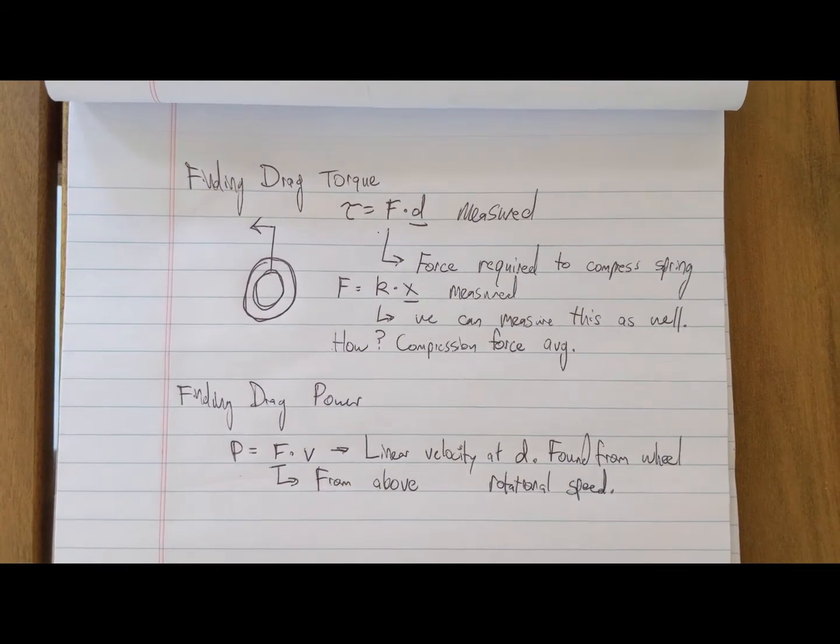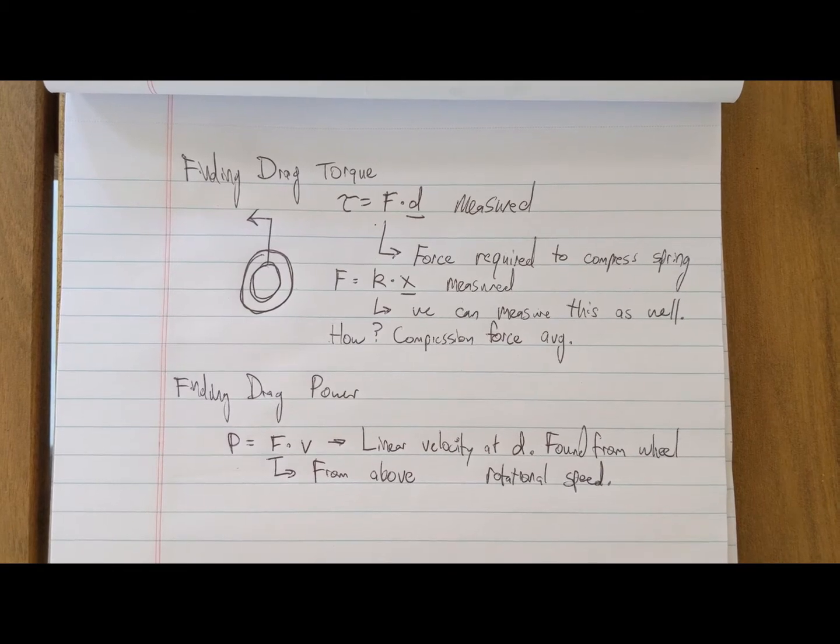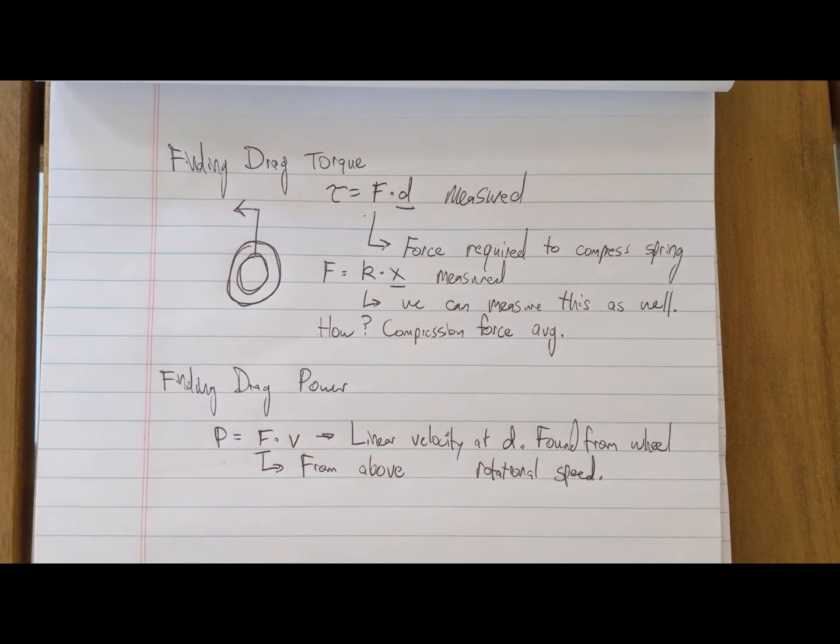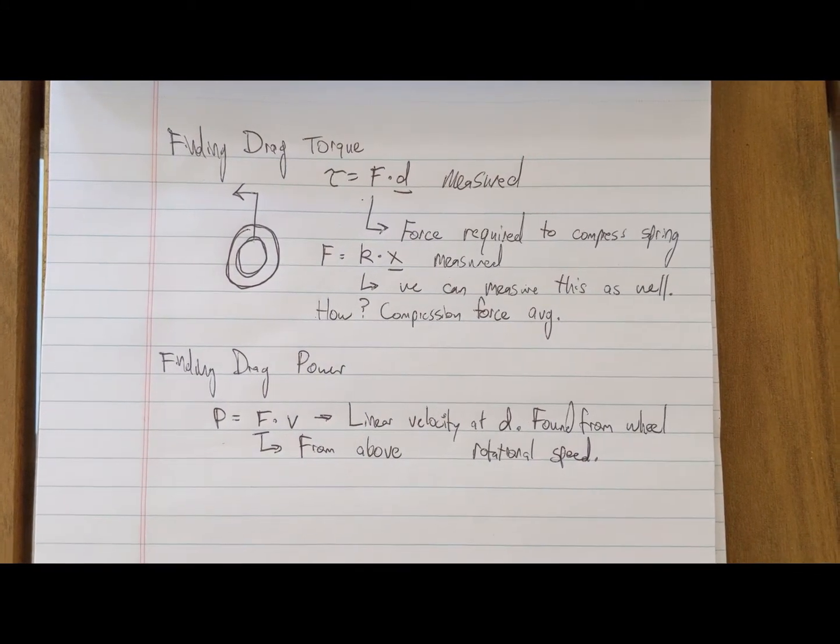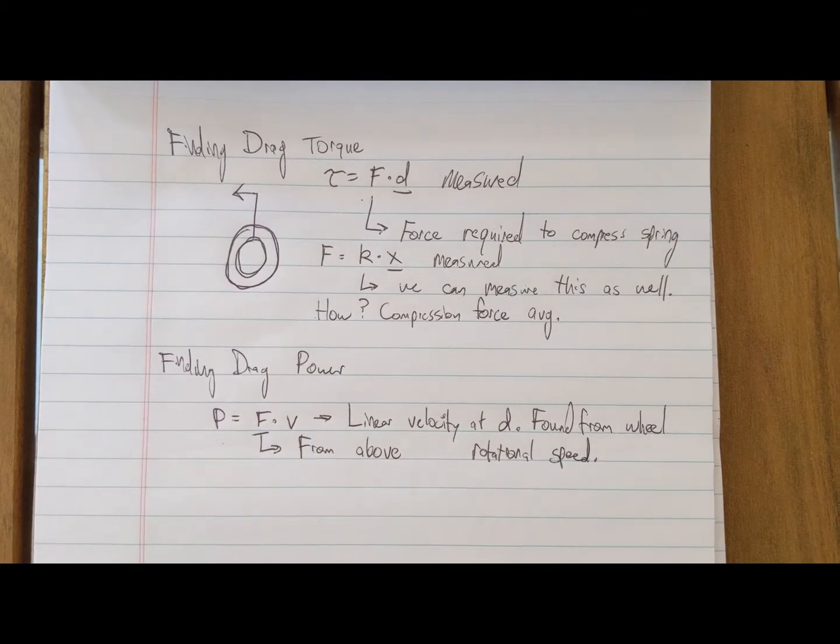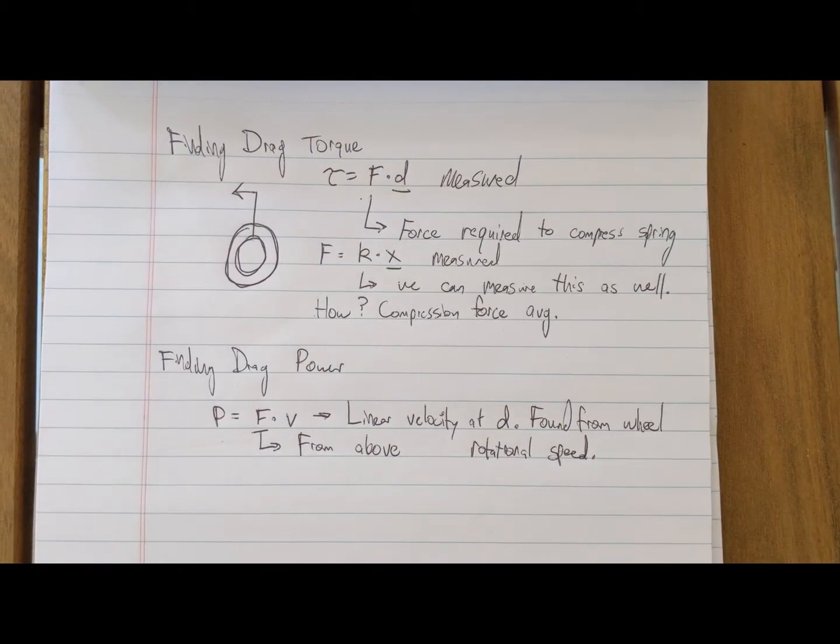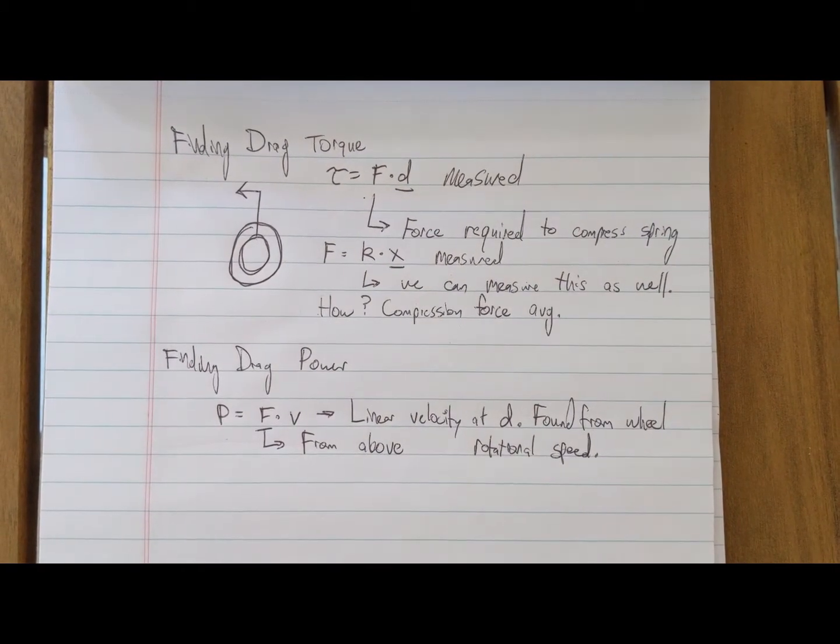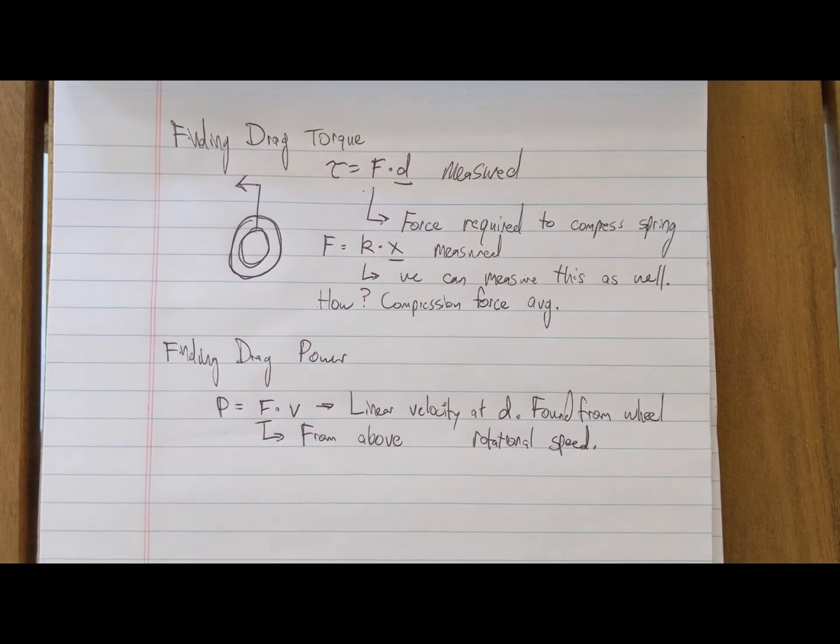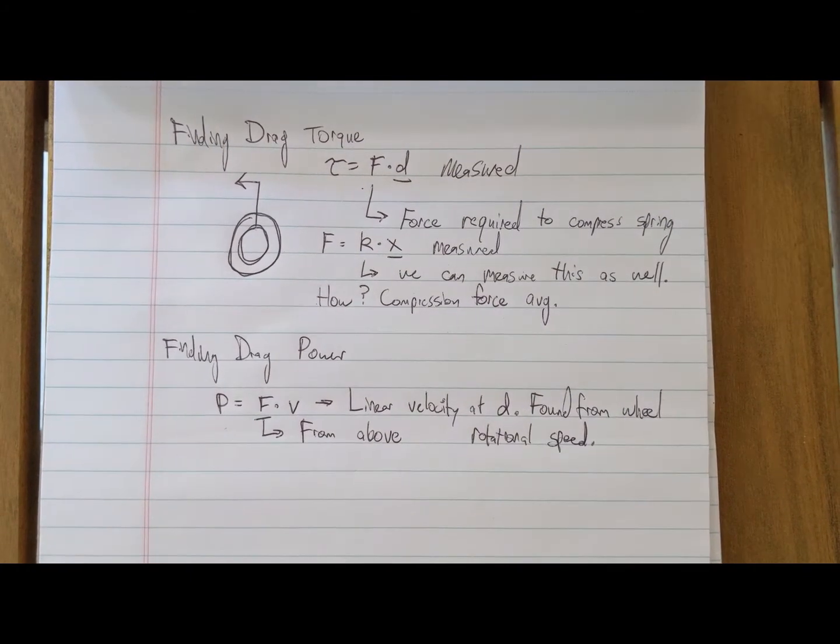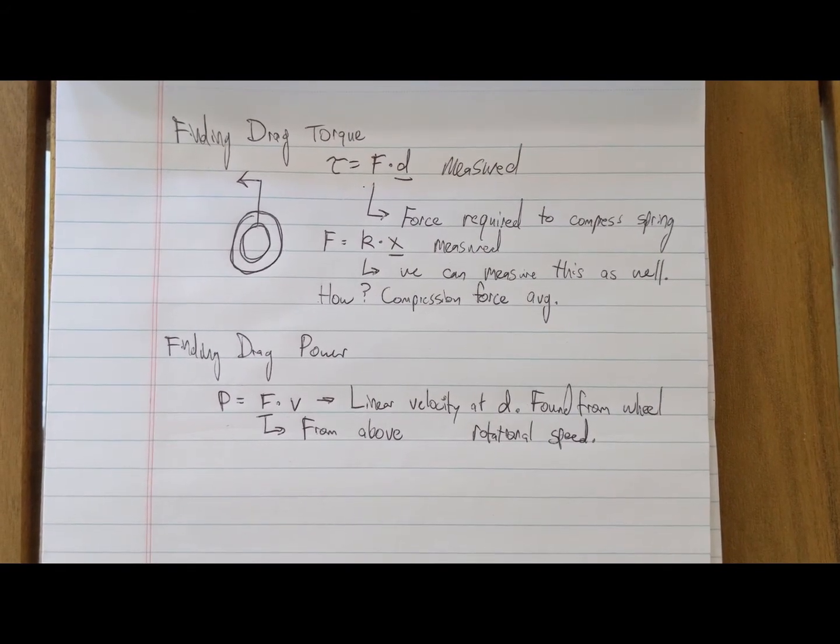But one thing that we will need to measure is the force required to compress the spring, shown in the second equation: F equals K times X. We can measure the distance that the spring is able to compress and the K value. We don't really need to find this, but it's also interesting to see what the K value is for springs this small. To find the force, we're actually going to use a trick and just average them out. I don't have a very precise scale, but we will be able to use an average to get a reasonable answer.